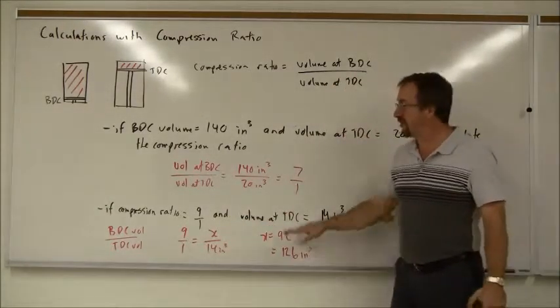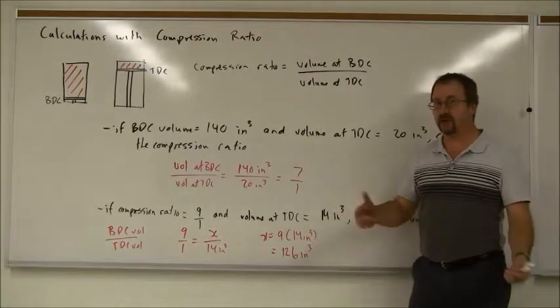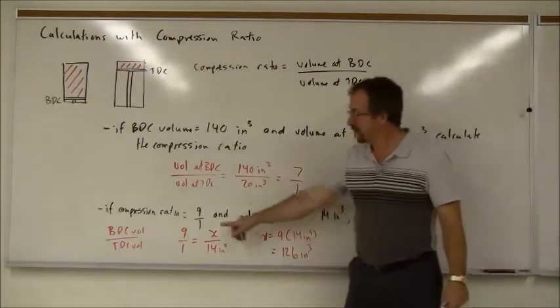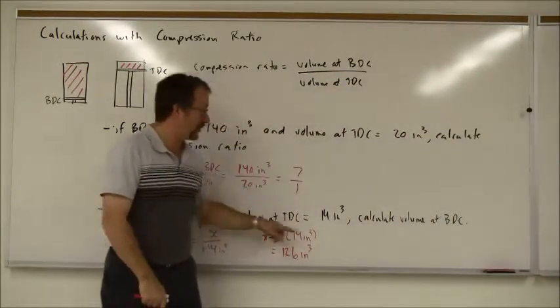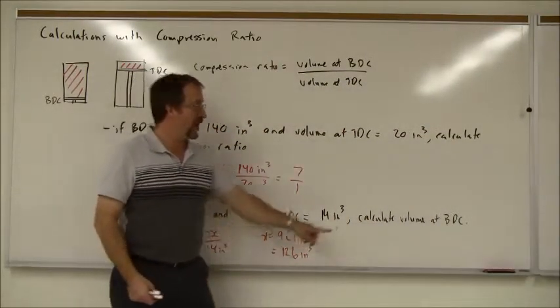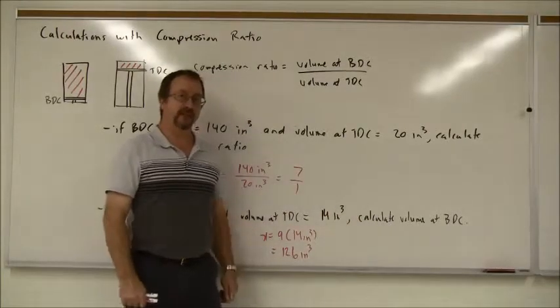Another variation that we did was if we know the ratio, how do we find one or the other of the volumes? In class we did a ratio of 9 to 1 and a top dead center volume of 14 cubic inches. We had to calculate the bottom dead center volume.